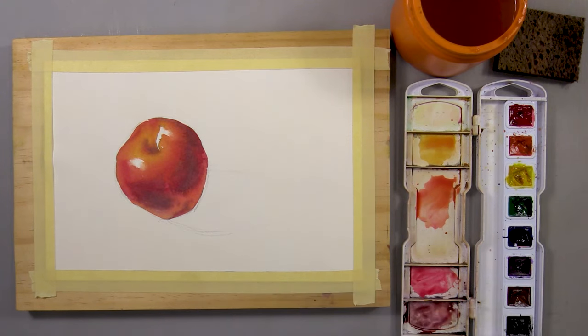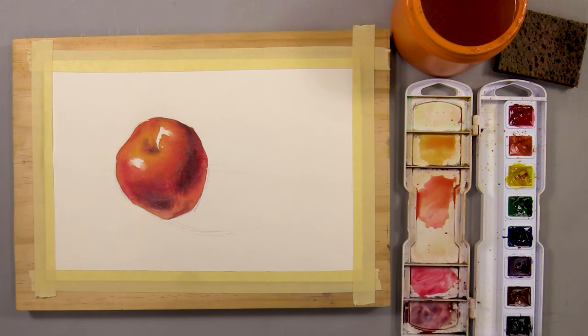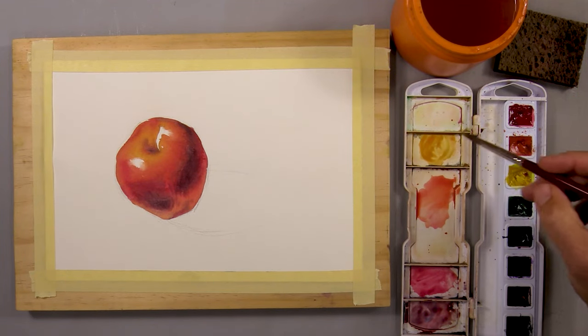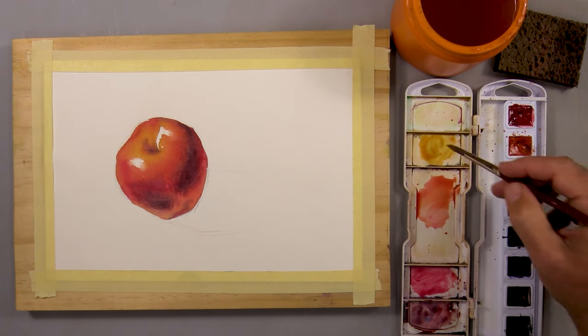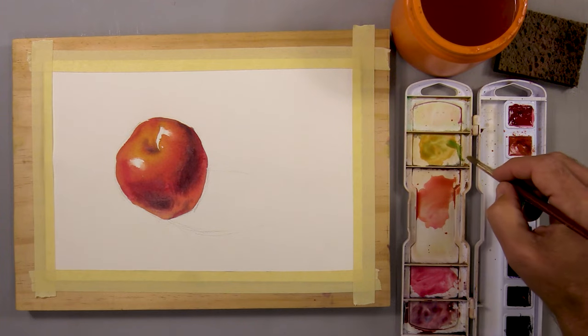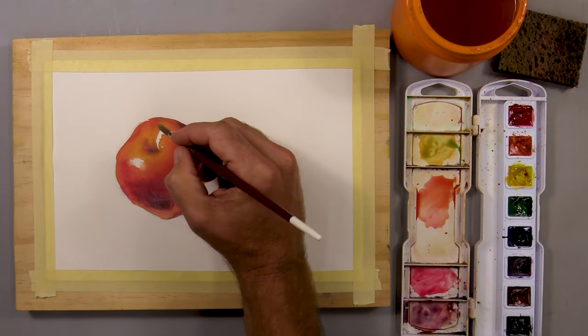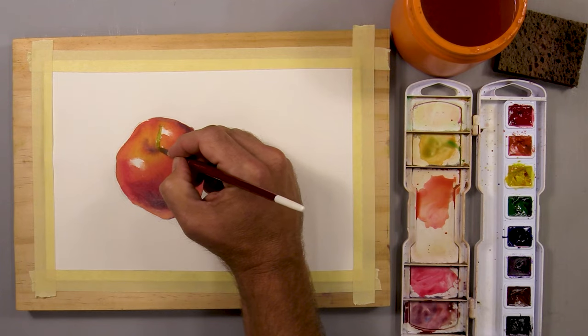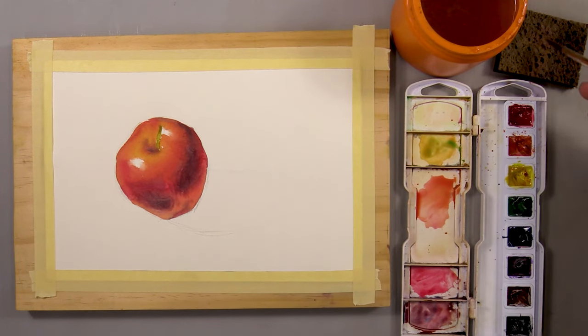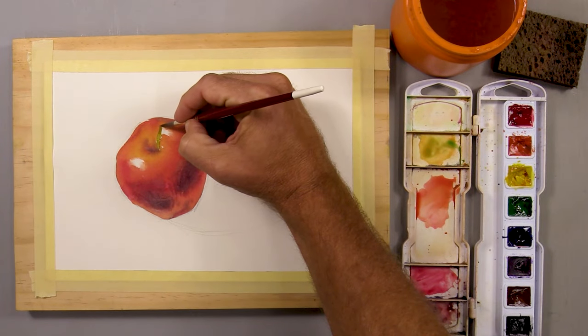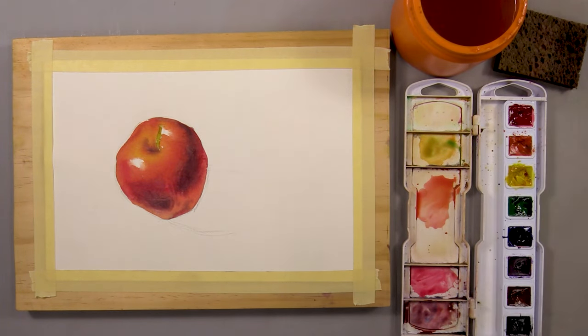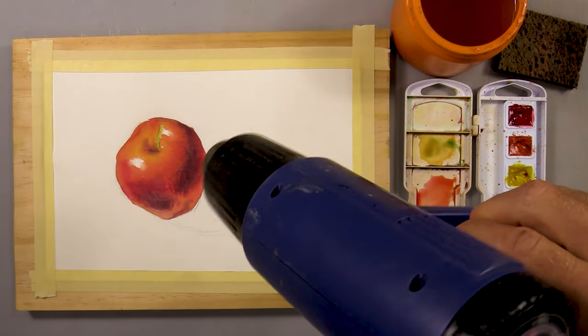Before moving on to the cast shadow, I decide to finish the stem of the apple. So I add some blue to that mixture of yellow-orange that I have toward the top of my palette to make it a dull green. I paint in most of the stem of the apple with this color first, but I also notice a little light area on the very top that looks like a highlight. So I use a lift out technique to take out that highlight on the top of the stem. Now I use my heat gun to dry off the apple and the stem.